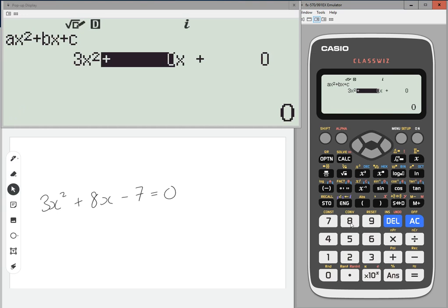So 3, then press equals after each one, 8, minus 7. And then once you've inputted those, press equals again.